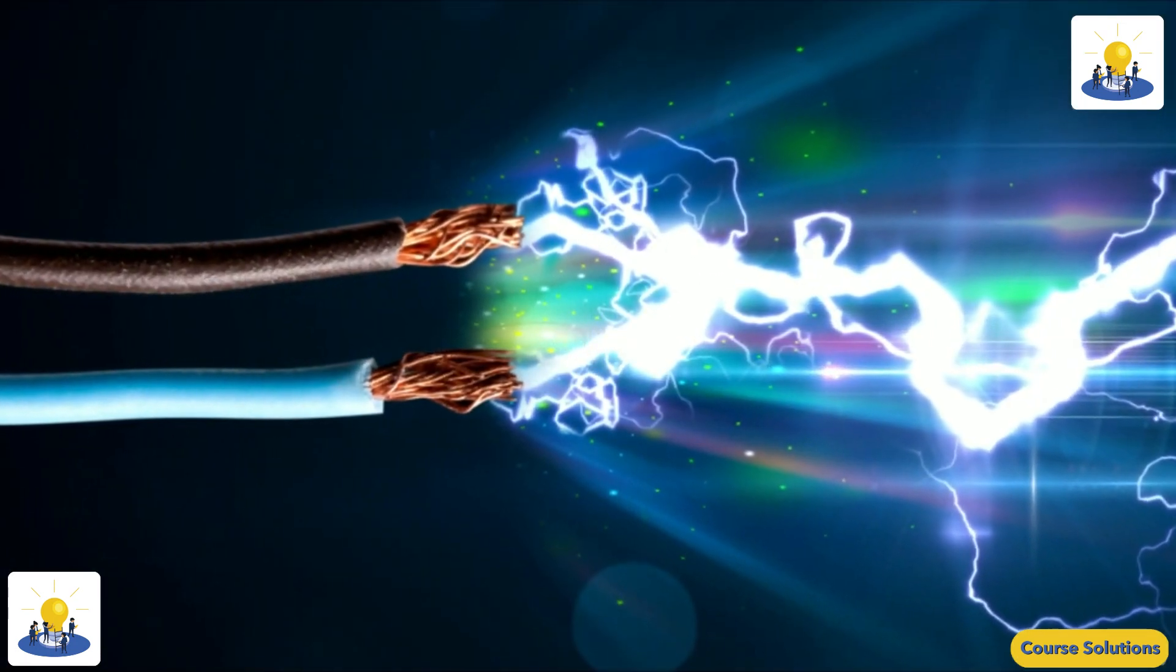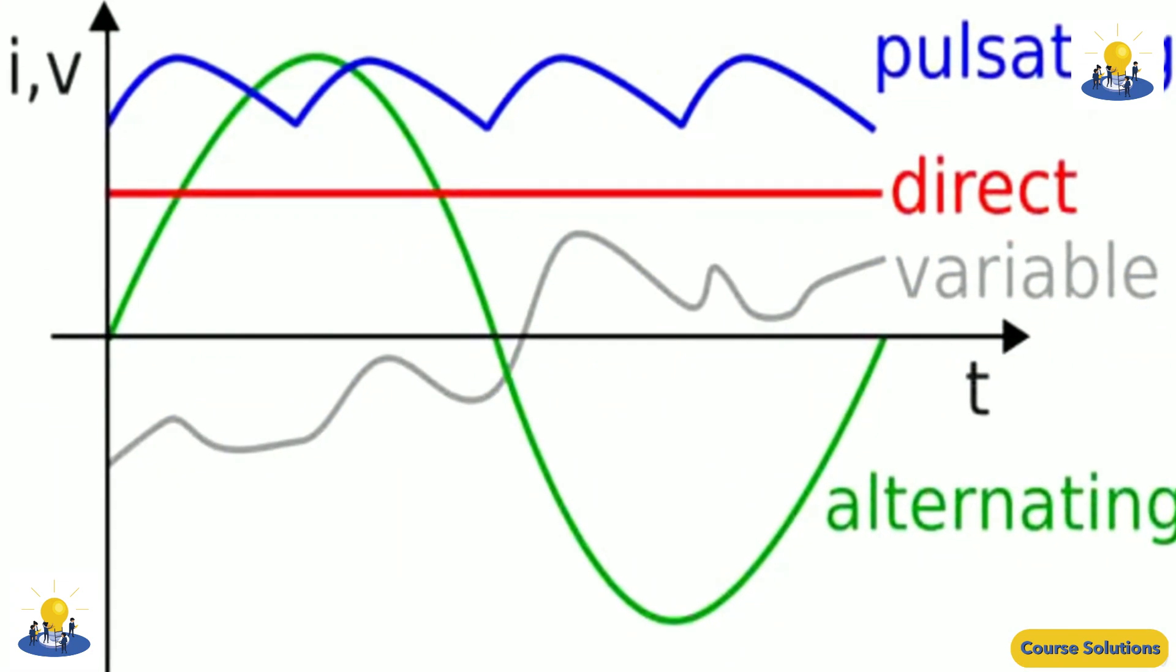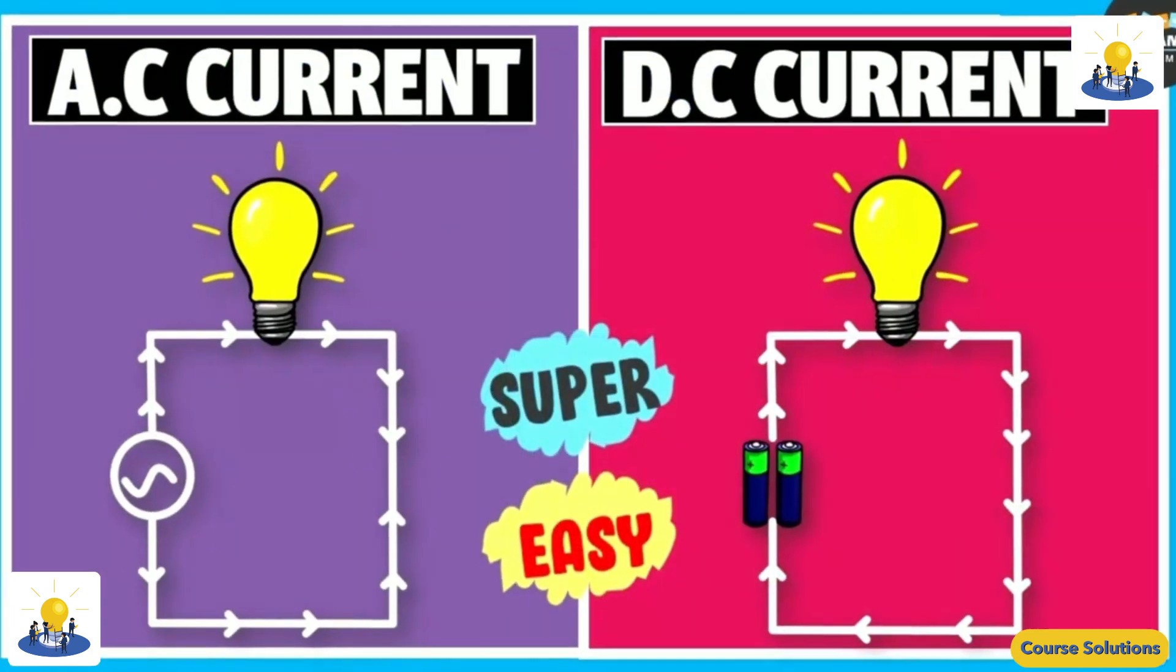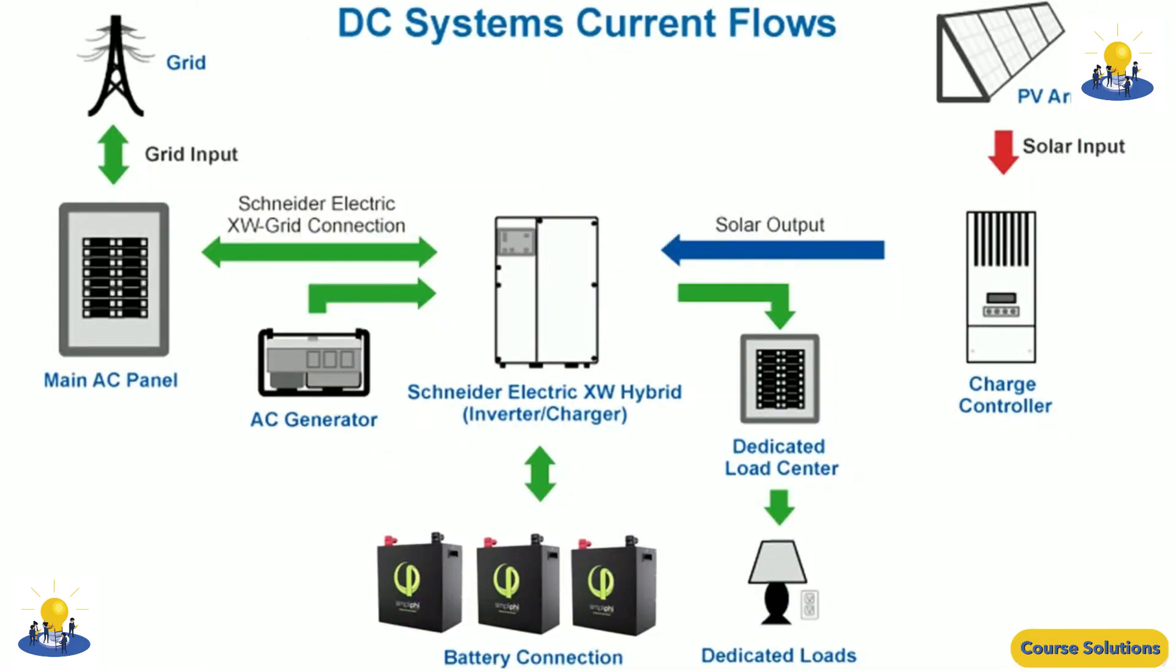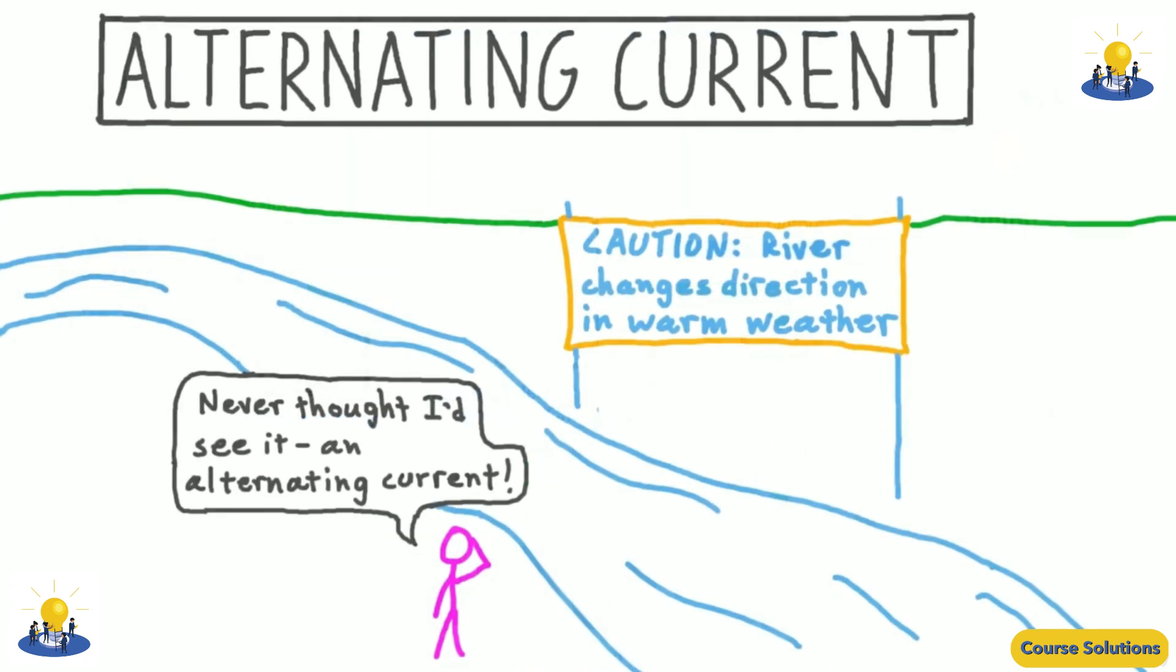Current systems transmit power from generators at hundreds of thousands of volts and use transformers to lower the voltage to 220 volts, as in much of the world, or 120 volts, as in North America, for individual customers.